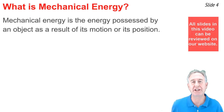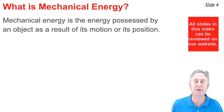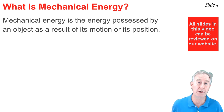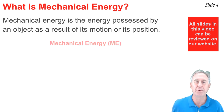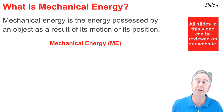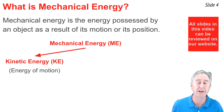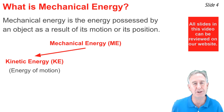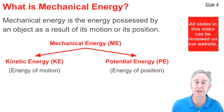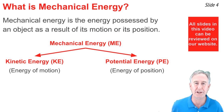Mechanical energy is the energy possessed by an object as a result of either its motion, or its position, or both. When we think of mechanical energy, we think of it being comprised of two types of energy. First, there's kinetic energy — the energy of motion. And second, there's potential energy — the energy of position.